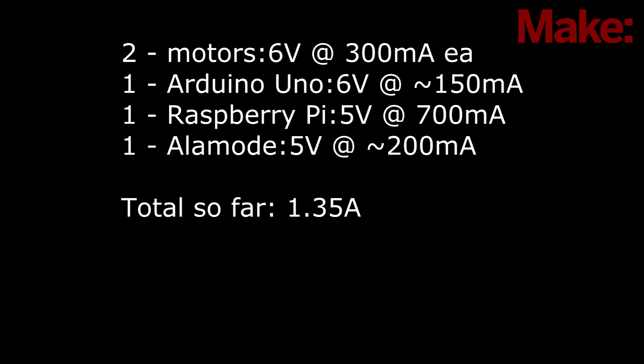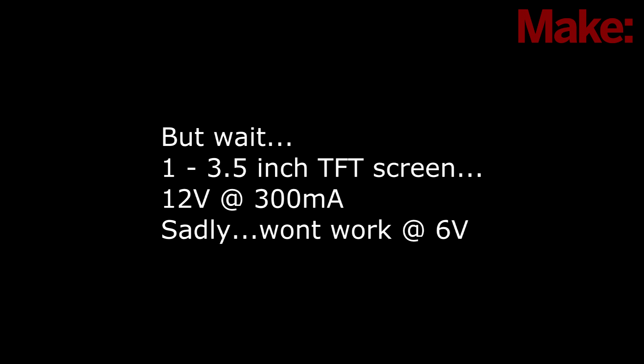Let's talk for a moment about the parts list. More importantly, I want to talk power consumption. You see, we have two motors running six volts at 300 milliamps each. The Arduino Uno that can run six volts at about 150 milliamps. The Pi at 700 milliamps and the Alamode at 200. So far, we're doing pretty good on current. However, we throw in a 12 volt 300 milliamp. Sadly, the TFT will not work at six volts. How to get around that.